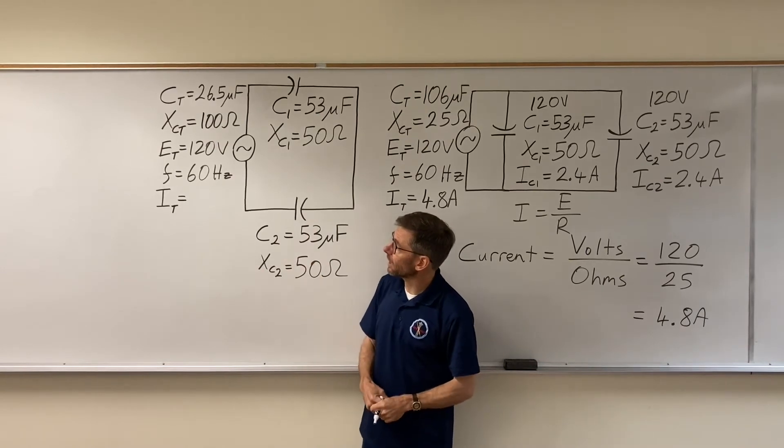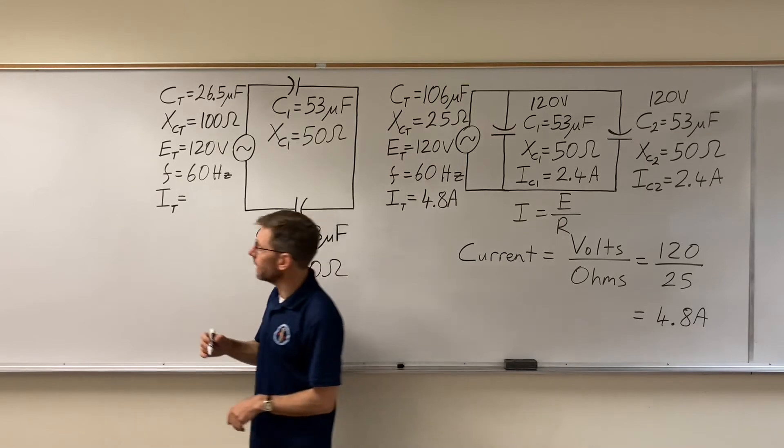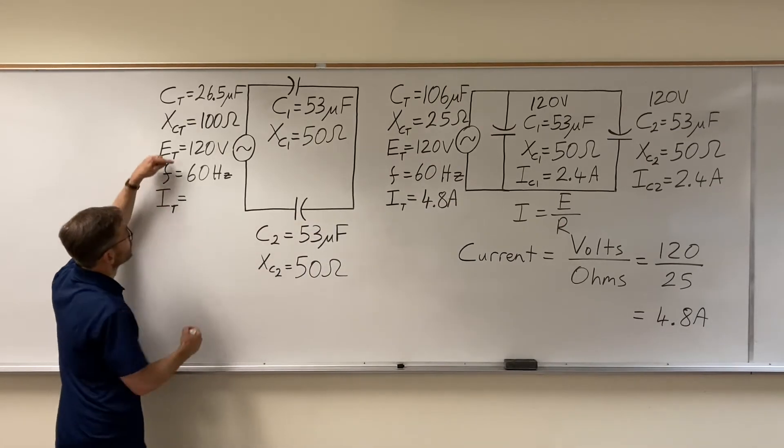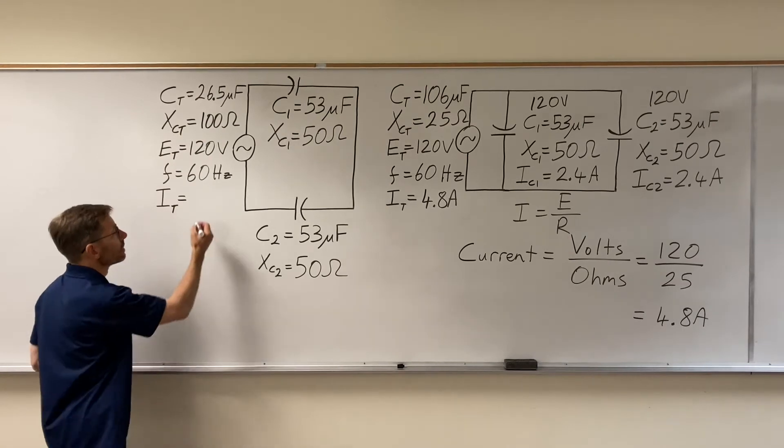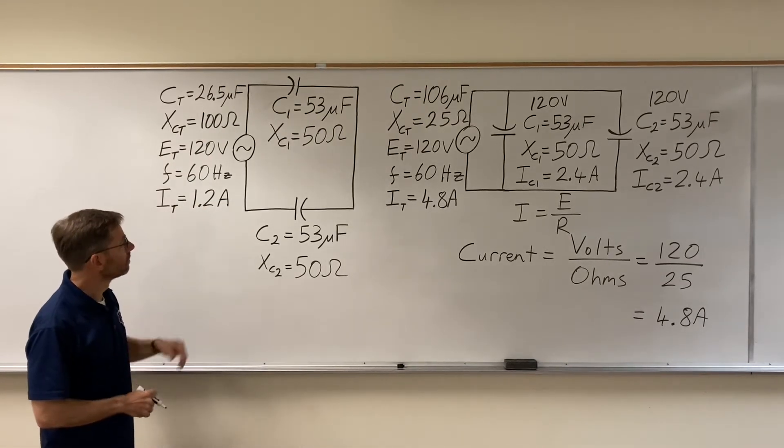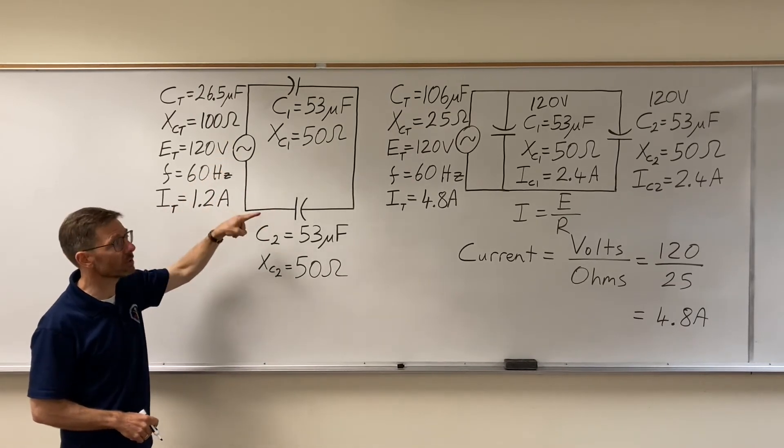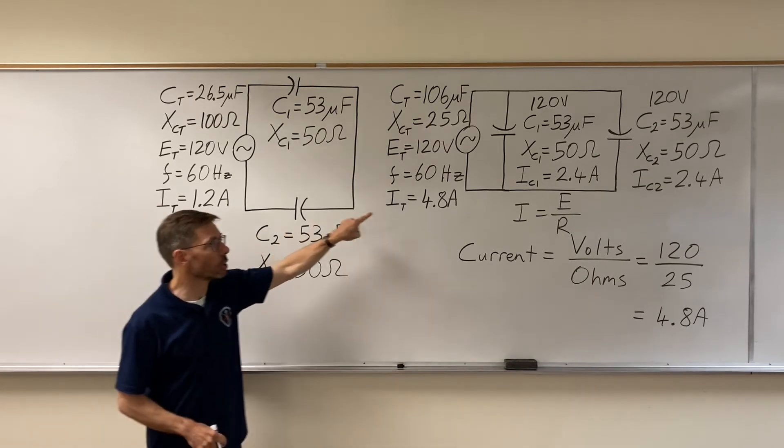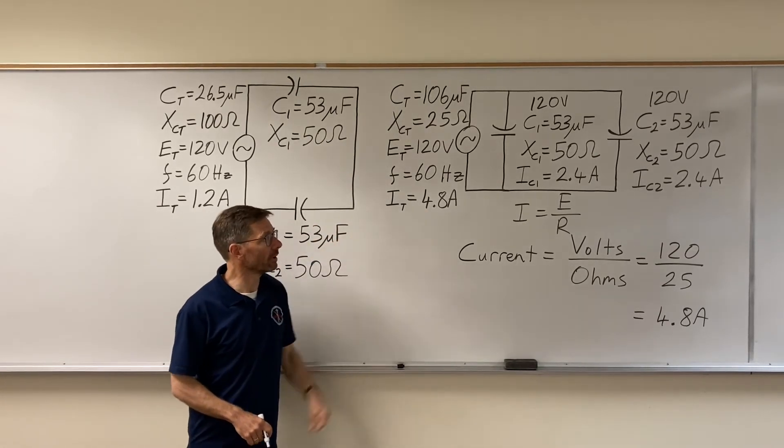And over here, how much current am I going to have flow? Well, turns out the opposition was a lot greater here. 120 volts divided by 100 ohms, 120 volts, 1.2 amps. When I put the same two capacitors in series, they only gave me a quarter of the amperage of when I put them in parallel.